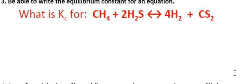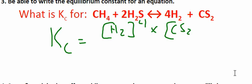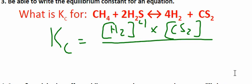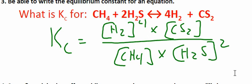I'm not actually asking for a number value here. You couldn't give me a number value unless I actually gave you concentrations. So all I'm asking is that you take H2 to the fourth times CS2 — the exponent of 1, or no exponent — over CH4 times the concentration of H2S squared. So that's pretty straightforward.